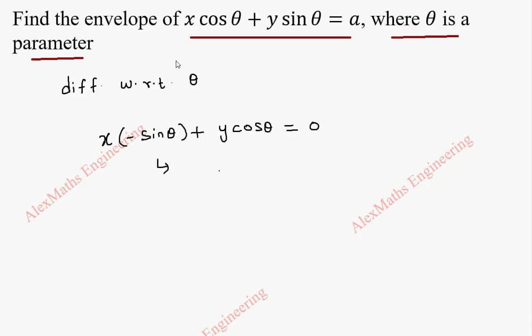Now we shall take this term to the other side. So y cos θ equals—there is a minus sign, it will become plus now—x sin θ. We can carry the cos θ to the other side and x to this side, so y over x will be sin θ over cos θ, which is tan θ.